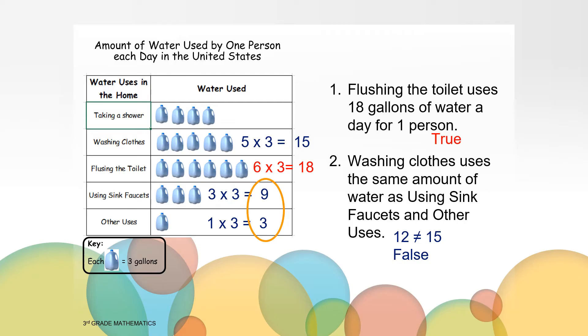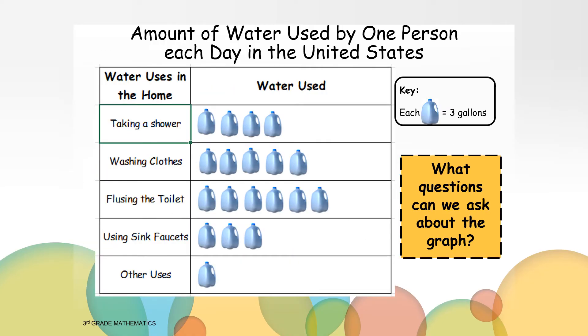Take a moment and check the two statements that you wrote earlier. If you need assistance with checking your statements, please ask your parents for help or reach out to your teacher. Asking and answering questions is another way to help us interpret graphs. What questions can we ask about the data shown in this graph? Take a moment to jot down one or two questions.